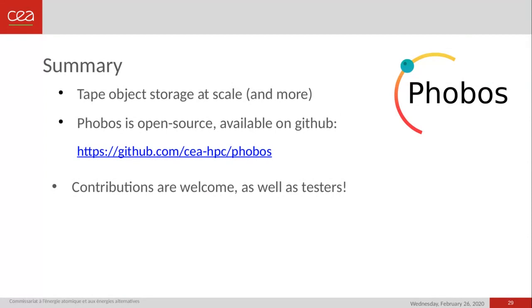One question was about data flow from client to server: do you ensure data integrity using checksums? Yes, that's part of what we can add in our layout layer. It's easy to add computation of checksums when we store a new object on tape, and as metadata stored on tape we can also store the checksum and verify it again when we retrieve the data. That's a feature we can easily add in upcoming development.